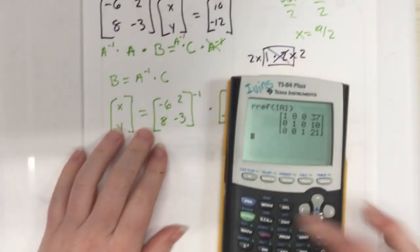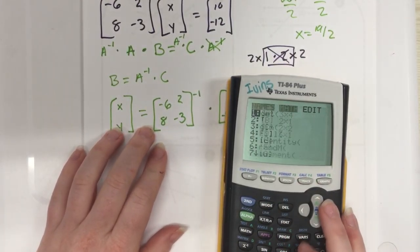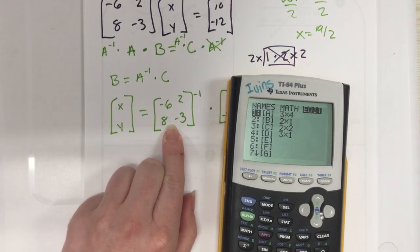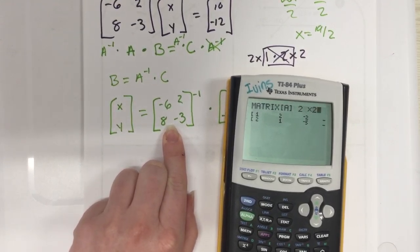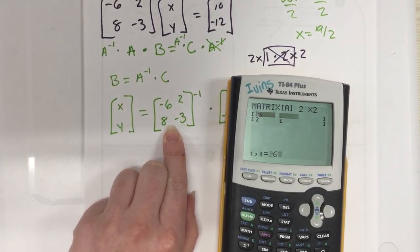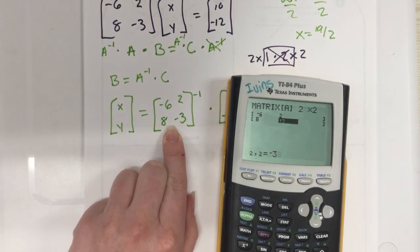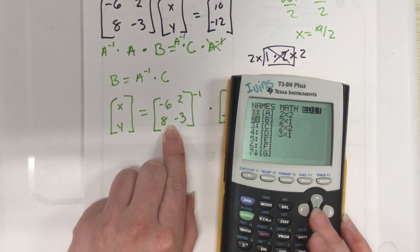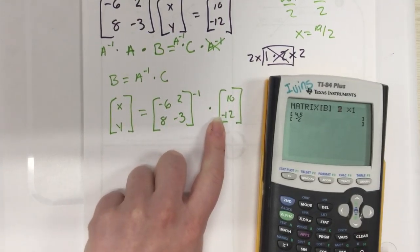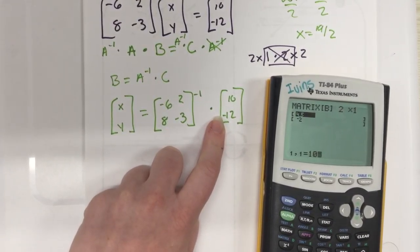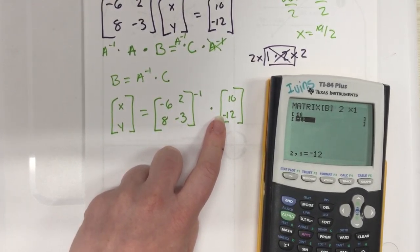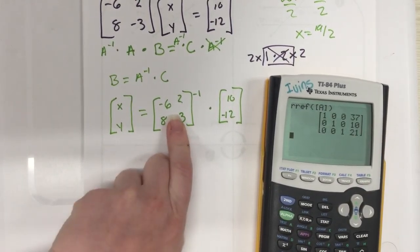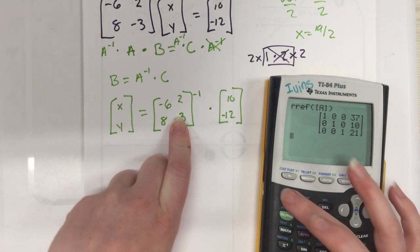We're going to have a calculator do all of this for us. We're going to go ahead and go to second matrix and edit matrix A. This is a 2 by 2, so I get -6, 2, 8, -3. Second quit, and go back to matrix and edit matrix B. This is a 2 by 1, which I already had, so I have 10 and -12.